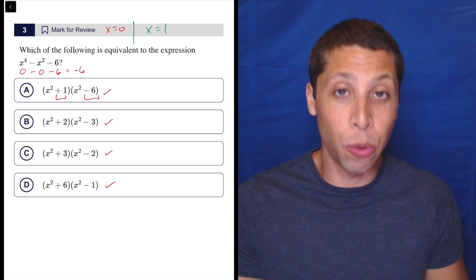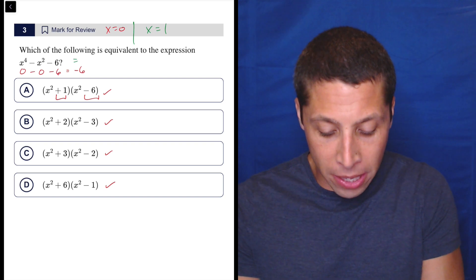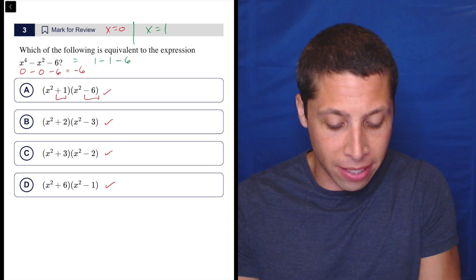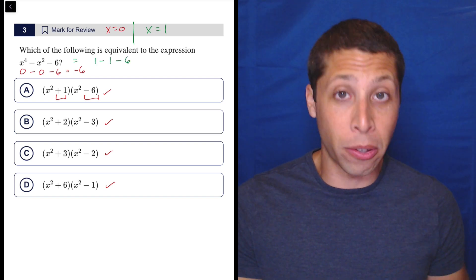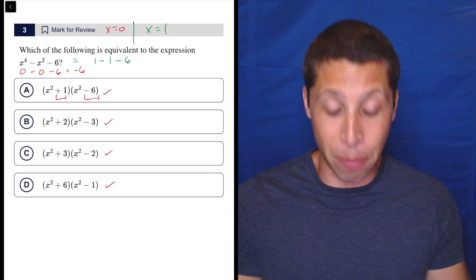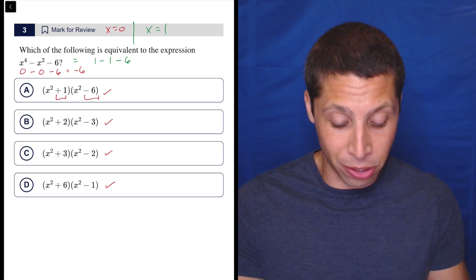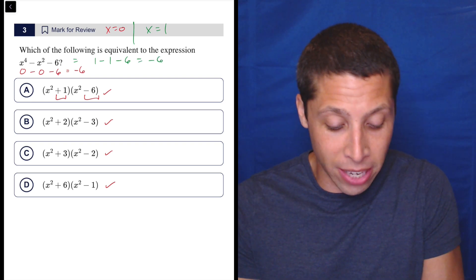Let's do x equals one. Now, this becomes one minus one minus six. Notice, the benefit of one is we don't have to worry about those exponents at all. It just keeps everything simple. So one minus one is zero, zero minus six is still negative six.